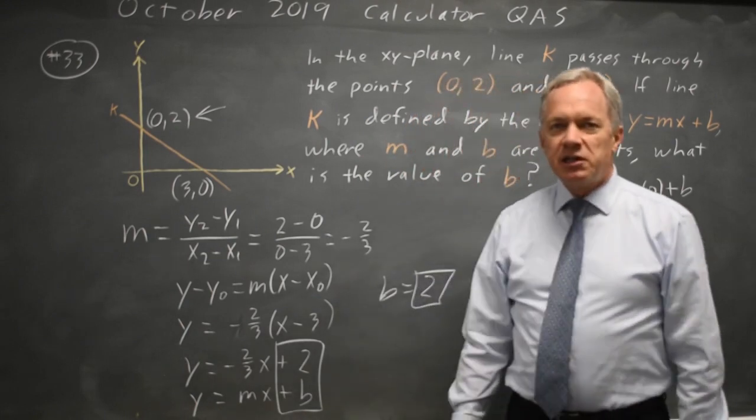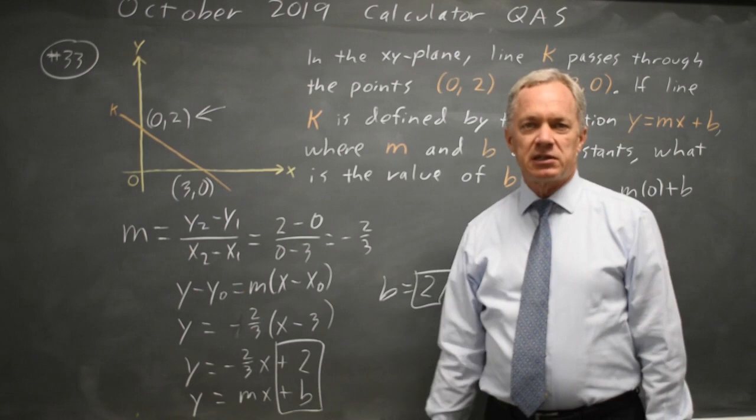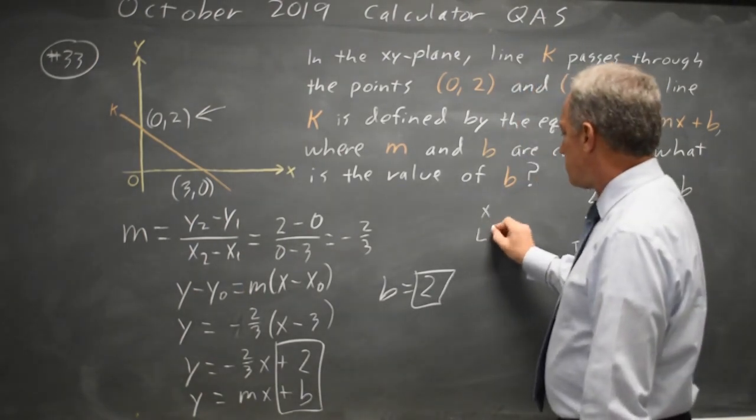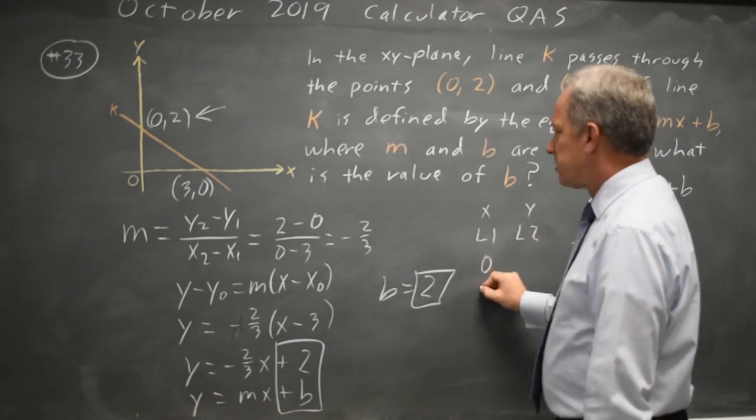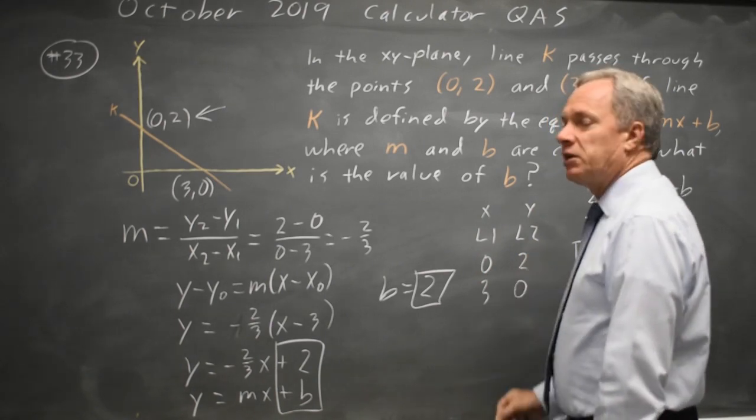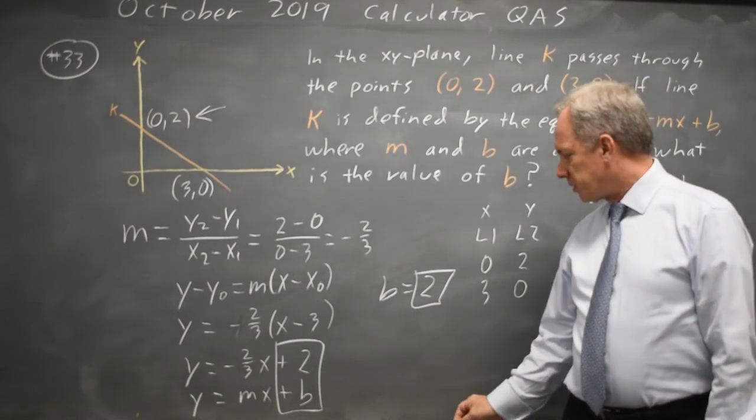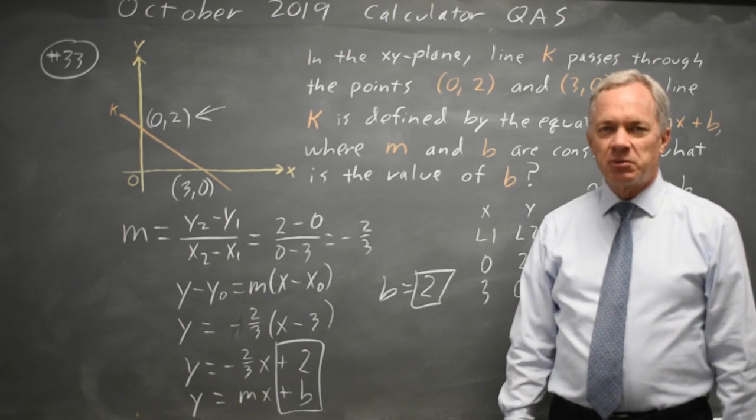And the third option is you can ask your calculator to find the line of best fit through these two points by putting your x values in list one and your y values in list two. So we have x equals zero and x equals three, y equals two and y equals zero, and then ask for linear regression. But I've solved it two different ways and given an introduction to the third, so that's more than sufficient for this problem.